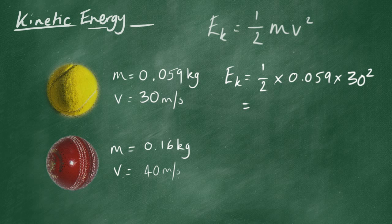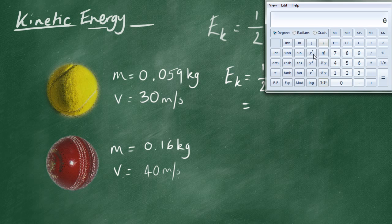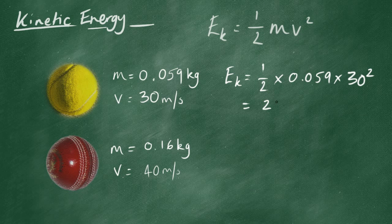Okay, reach for the calculator, I wouldn't try and attempt to do that in my head. 0.5 times 0.059, times 30, squared. So, that is 26.6 joules. Okay, to 3 sig figs. Okay, not too bad, not too much kinetic energy there.